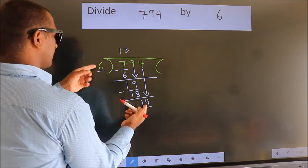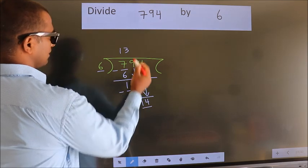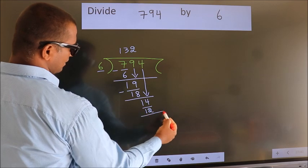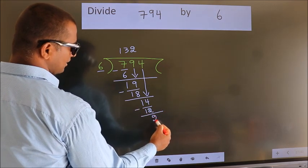A number close to 14 in the 6 table is 6 times 2 is 12. Now we subtract. We get 2.